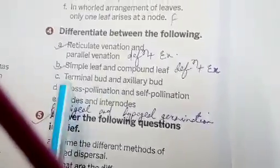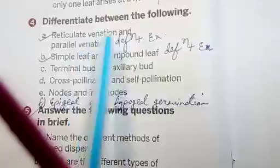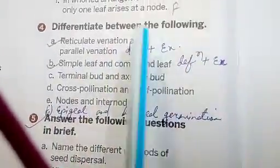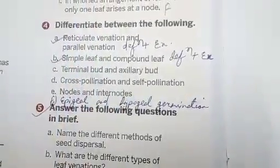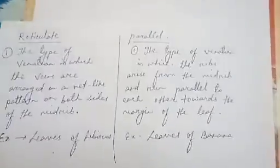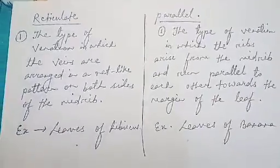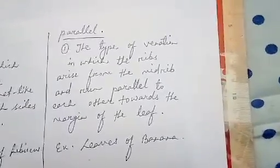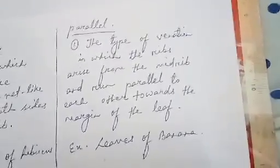Now for differentiate between questions, you will write them down in your copy. For reticulate and parallel venation, I have already taught that — write the definitions from the book. I have done one example for you on paper; please see how I have written it and write it the same way in your copy. You can take a screenshot and write it down.